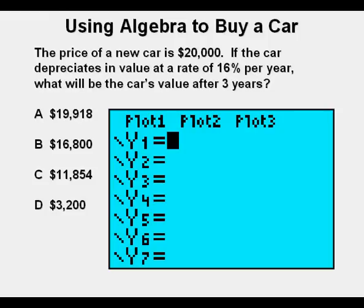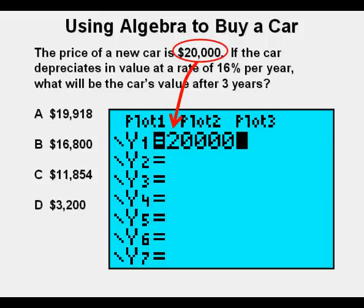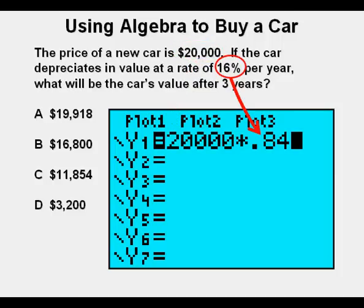First, we go to the Y equals view in the calculator. Next, enter the base value, $20,000. Next comes the hardest part. If an asset depreciates at a rate of 16%, what does that mean? It means that its value is 100% minus 16, or 84% of the previous year's value. So we multiply by .84.